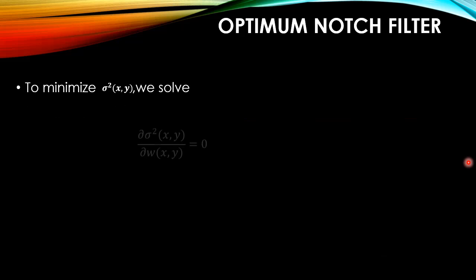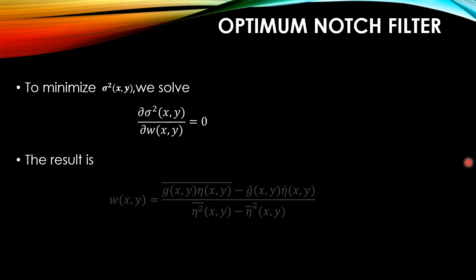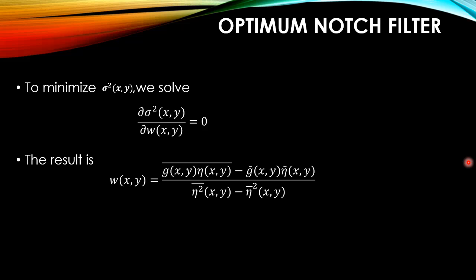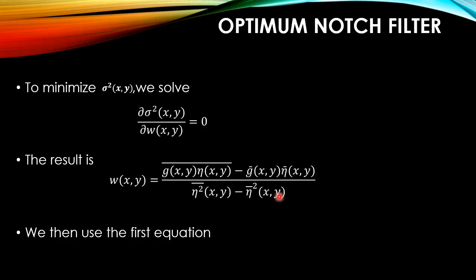To minimize σ²(x,y) we solve ∂σ²(x,y)/∂w(x,y) = 0. Simplifying gives: w(x,y) = [g'(x,y)·η'(x,y) − ĝ'(x,y)·η̄'(x,y)] / [η̄²(x,y) − η̄'²(x,y)]. To obtain the restored image, we compute w(x,y) from this equation and substitute into the restoration formula. Since w(x,y) is assumed constant in the neighborhood, it is computed once per non-overlapping neighborhood and applied to all image points contained in that neighborhood.